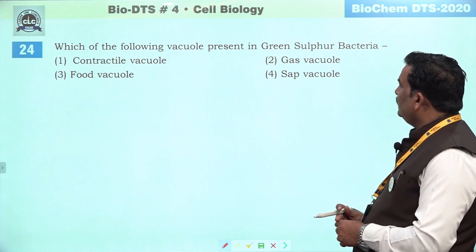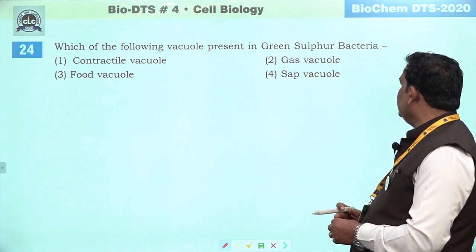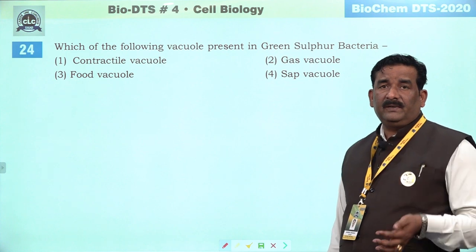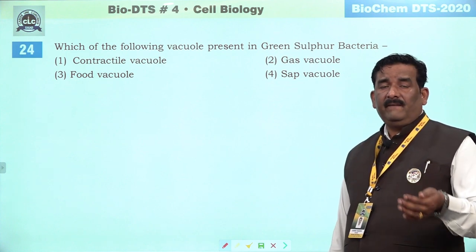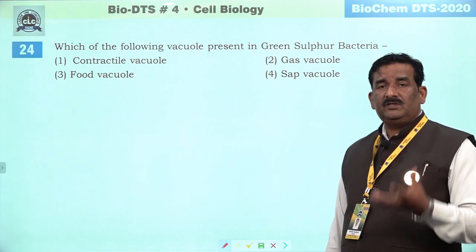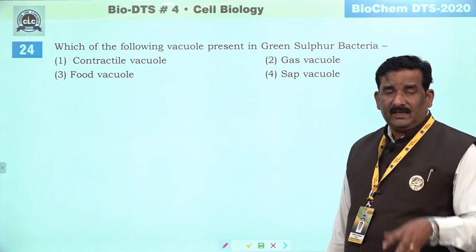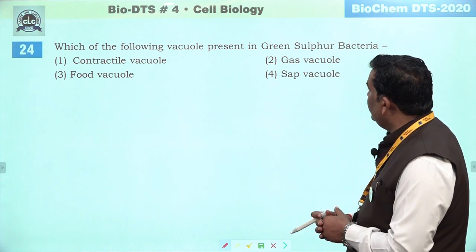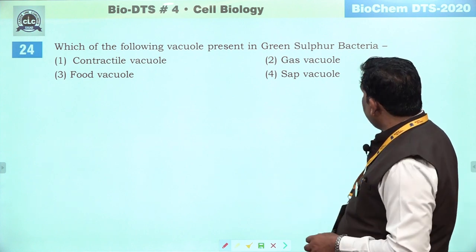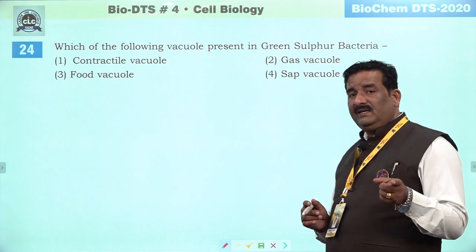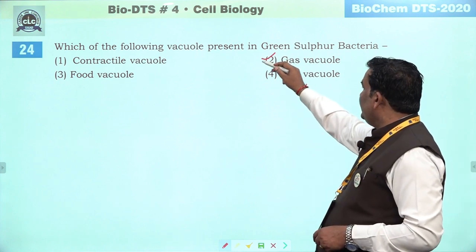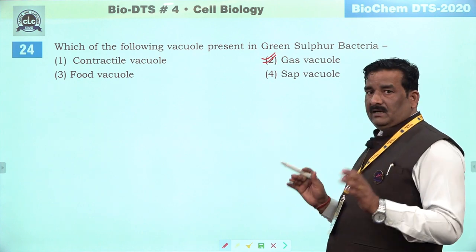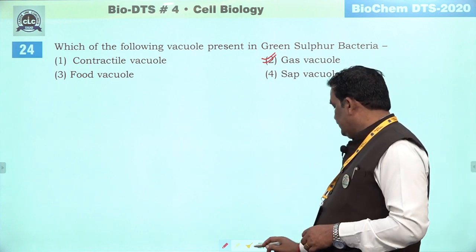Next question: which of the following vacuoles present in green sulfur bacteria? NCRT ka statement hai ki jo bhi autotrophic organism hai, unhein light ki presence mein rehna hai. Isliye buoyancy provide karne ke liye inke andar gas vacuole hoti hai, jiski wajah se water ki upper surface par woh stay kar paate hain. Green sulfur bacteria, purple sulfur bacteria and BGA — inke andar gas vacuole paai jaati hai. Second is the right answer.